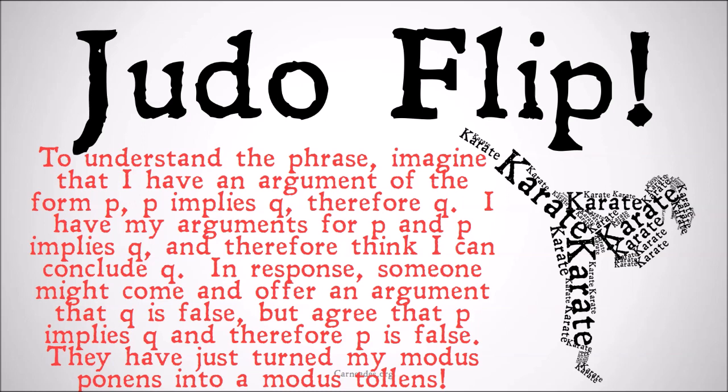In response, someone might come and, instead of questioning my specific premises or the validity of the argument form, might offer an argument that Q is false — but agree that P does imply Q — and therefore conclude that P must be false. Rather than picking a specific problem with my argument for P, they say that because Q is clearly false, this is actually a modus tollens, and so your P must be false. They've just turned my modus ponens into a modus tollens.